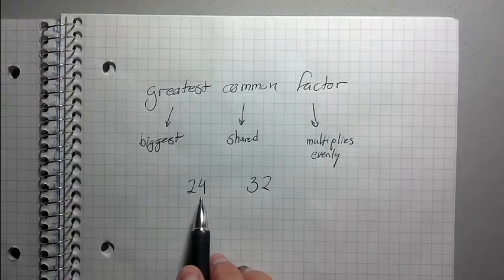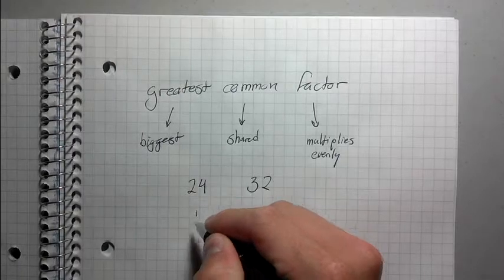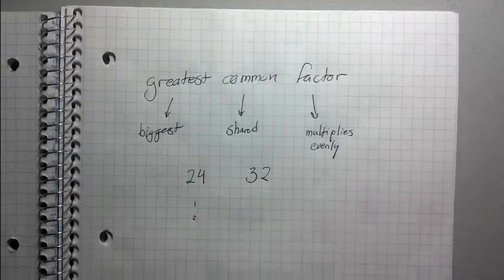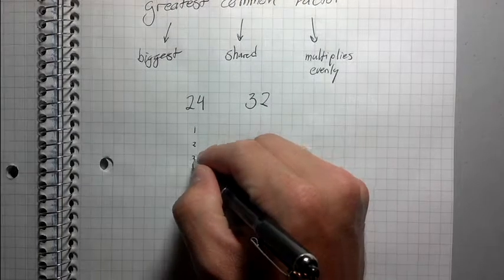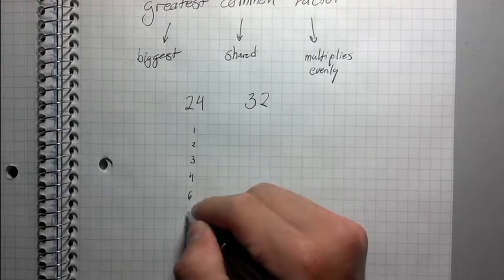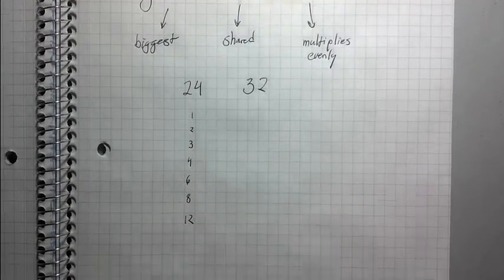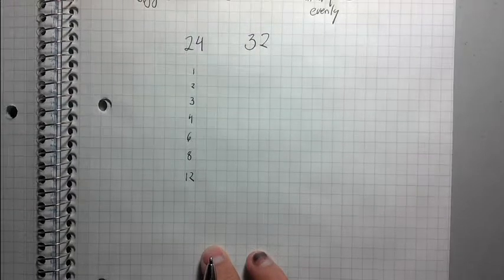Maybe I can just list these out. I'm going to list out all the numbers that go into 24. Well, 1 goes into 24. 2 goes into 24. 3 goes into 24. 4 does. 6 does. 8 does. And 12 does. 24, it turns out, has a large number of factors.